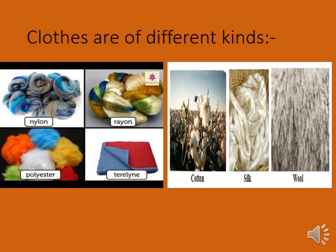Do you know cotton, silk, and wool? Look at the picture. Cotton, silk, and wool — these are called natural fibers. That means these are grown naturally from plants and animals. We get them naturally.